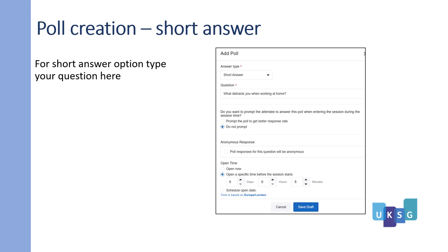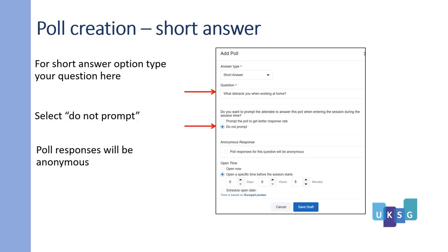For the short answer option, type your question here. Select Do Not Prompt — polls will be anonymous.